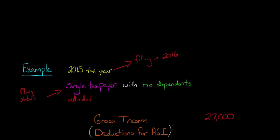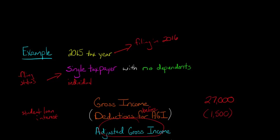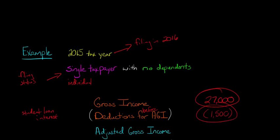Our first deduction — we talk about deductions for AGI, or deductions before AGI. We're going to have a deduction before AGI and then one after. For the deduction before AGI, let's say this person has $1,500. That's in parentheses to show it's being subtracted. Let's say this person had student loan interest — they paid $1,500 in interest on their student loan balance. So now that gives us our first subtotal: adjusted gross income, or AGI. We take $27,000 and subtract $1,500, giving us $25,500.